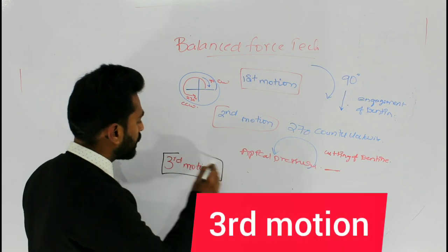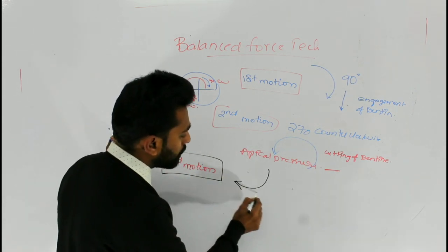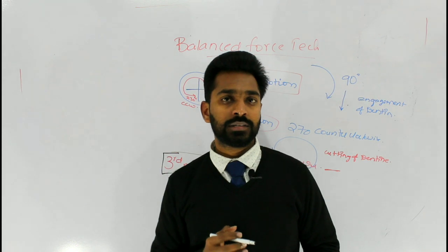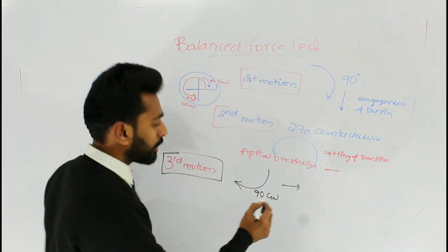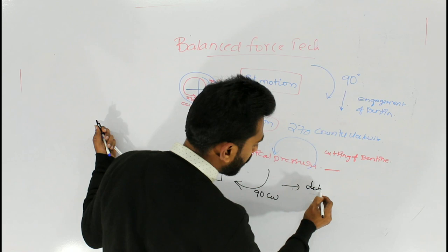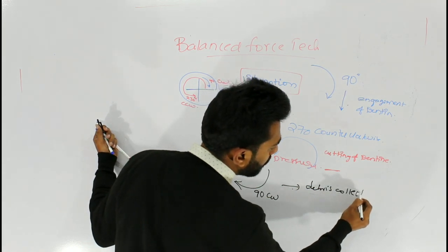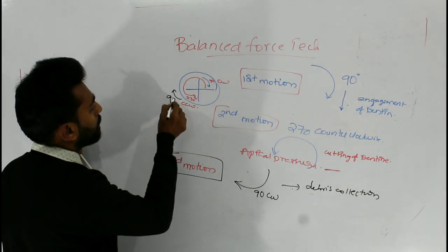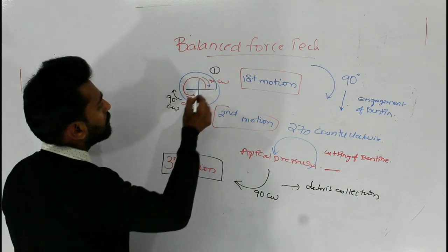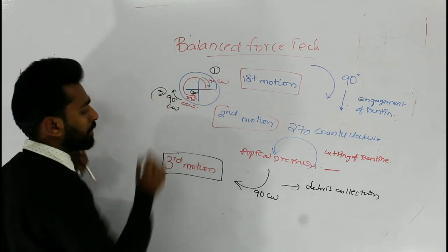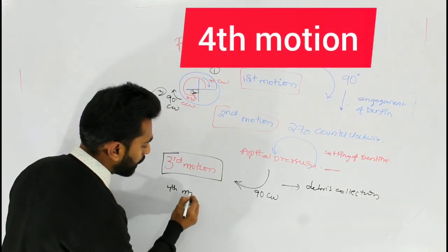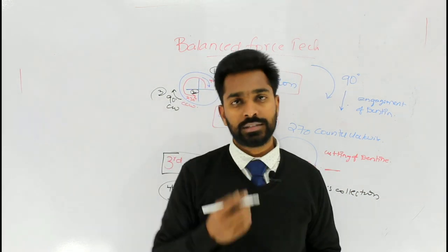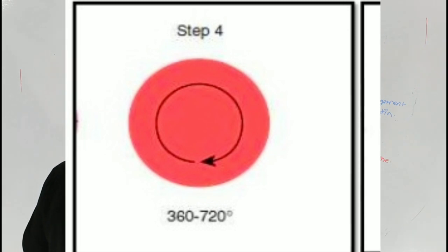Coming to the third motion, again have a 90 degree clockwise rotation. This causes the collecting of the dentinal debris on the surface of the file. The fourth motion includes just pulling the file outside the canal by rotating it 360 degrees.